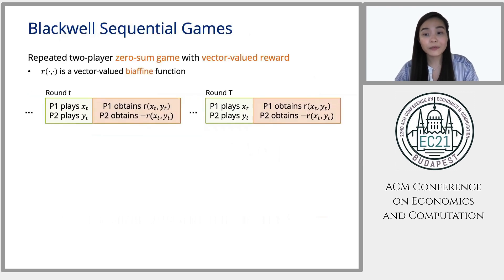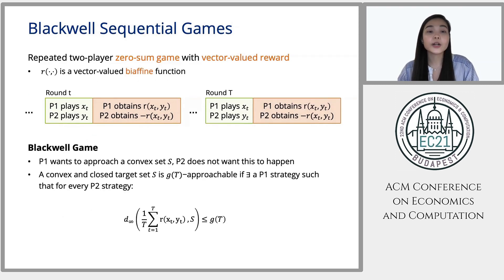To explain Blackwell approachability, I will go briefly into Blackwell sequential games. So it is a repeated two-player zero-sum game with vector-valued rewards. On each round t, player one plays x of t, and player two plays y of t. Then player one obtains some reward r of x of t and y of t, and player two obtains like the negative of it because it's zero-sum. The reward here r is a vector. It's actually a biaffine function of the actions which are x of t and y of t. Now, in a Blackwell game, player one wants to approach a convex set s and player two wants to prevent this from happening. A convex and closed target set s is g of t approachable if there exists a strategy for player one such that whatever player two plays, the L infinity distance between the average vector valued reward and s is upper bounded by g of t. And ideally, we want g of t to go to zero as t goes to infinity because that means that the average vector valued reward is getting closer and closer to s.